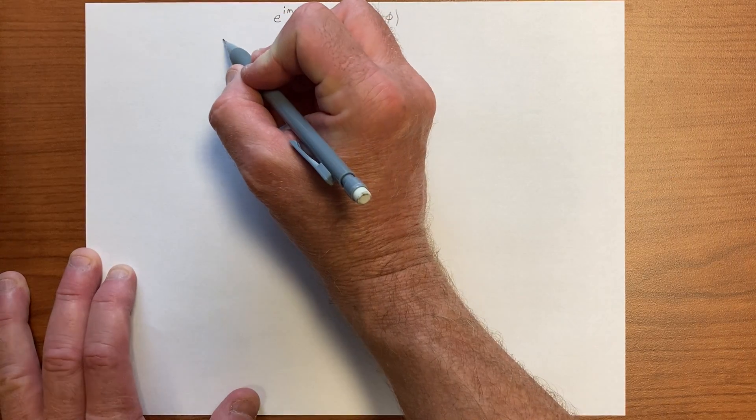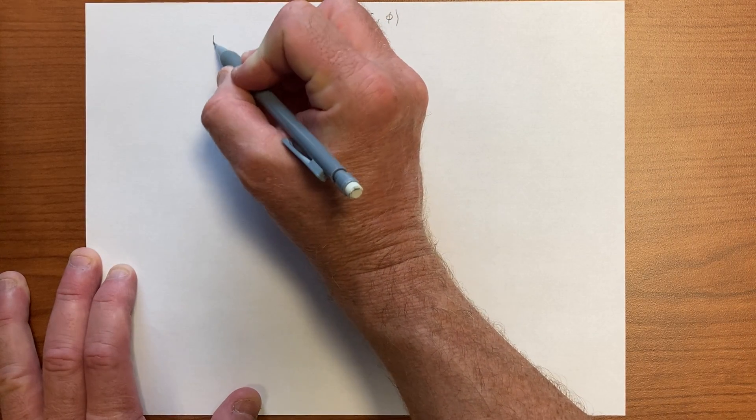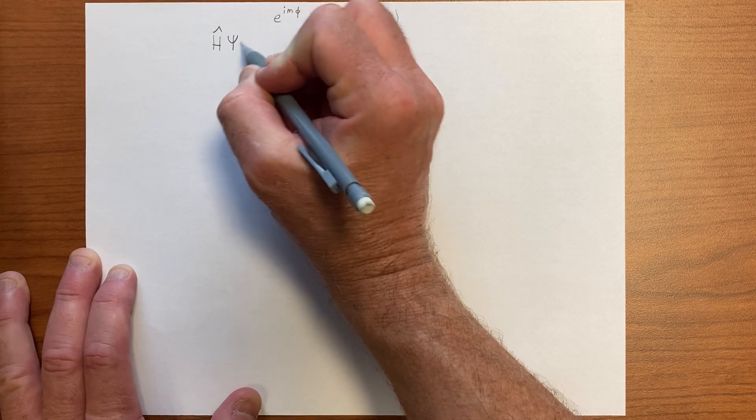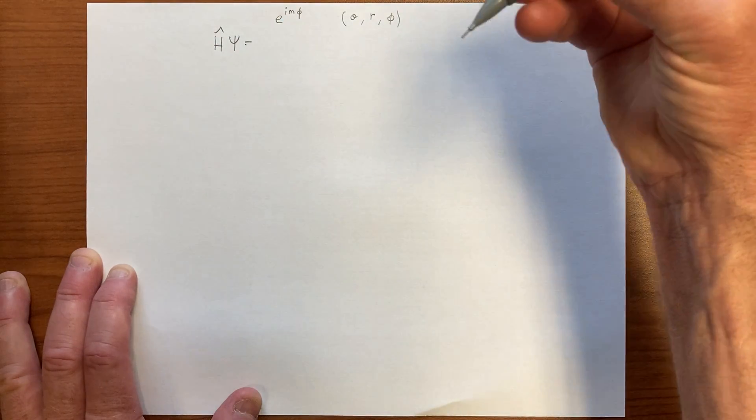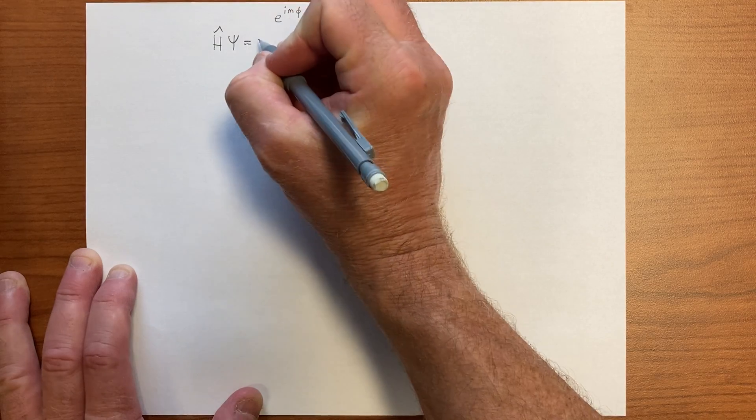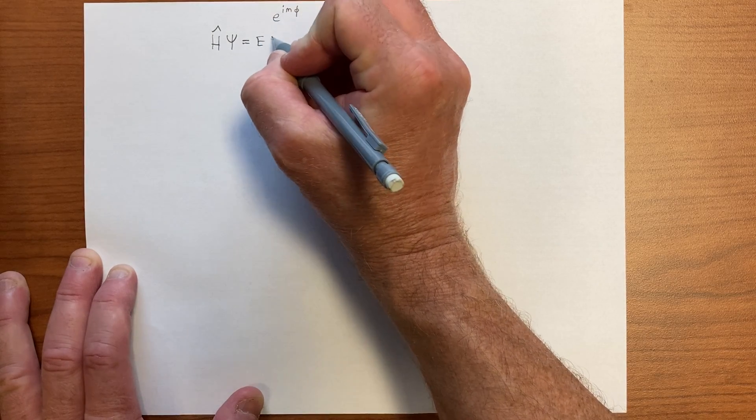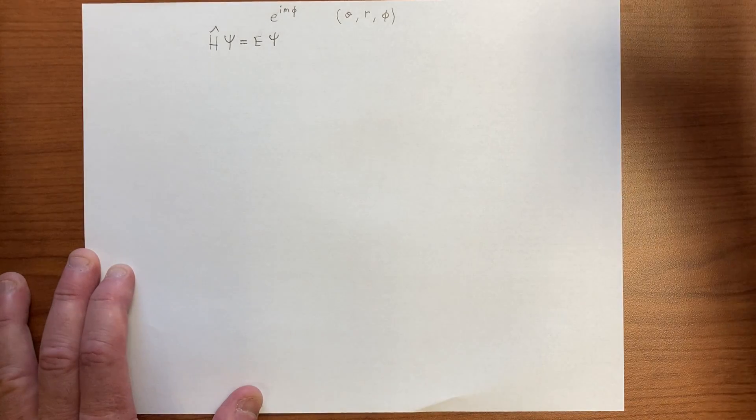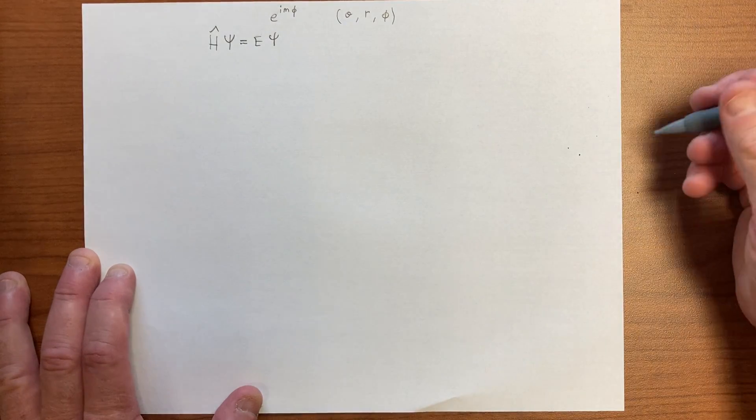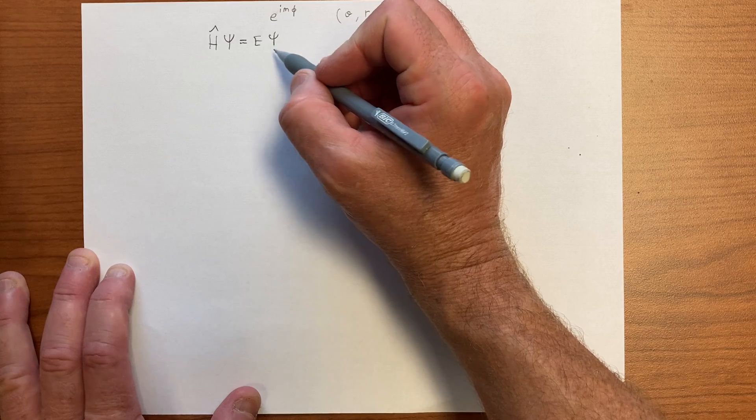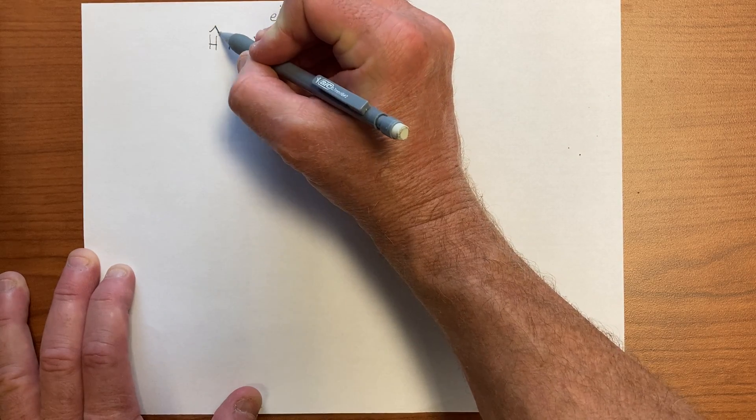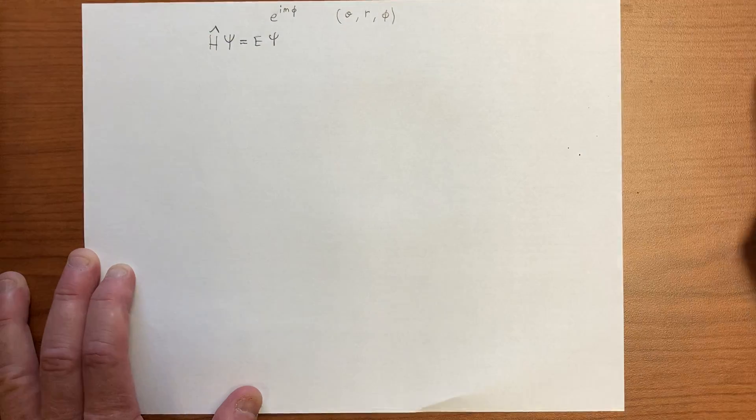So we're going to be in a position such that the Schrodinger equation, the time-independent Schrodinger equation, as we have seen before, obeys this kind of equation, and so we're looking for, we're going to get eigenfunctions of the h operator.